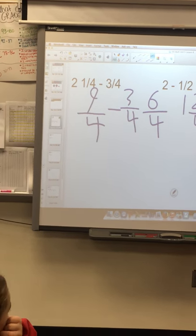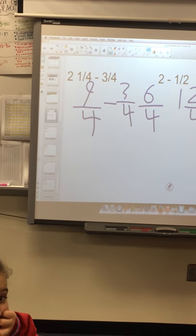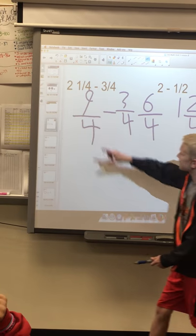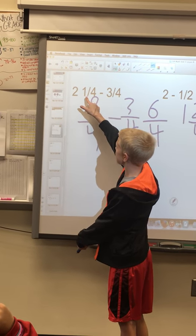How did you get at the very beginning, did you get 9 over 4, 9 fourths? Because I did 2 times 4, which is 8, and then plus 1.